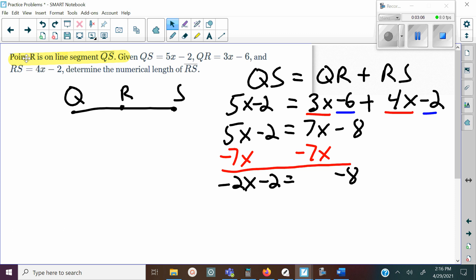So we'll subtract 7x on both sides. Once we do that we get -2x - 2 = -8, and then we're going to add 2 on both sides. That's going to leave us -2x = -6, and then we're going to divide by -2. Negative divided by a negative is positive, so now we have x = 3.